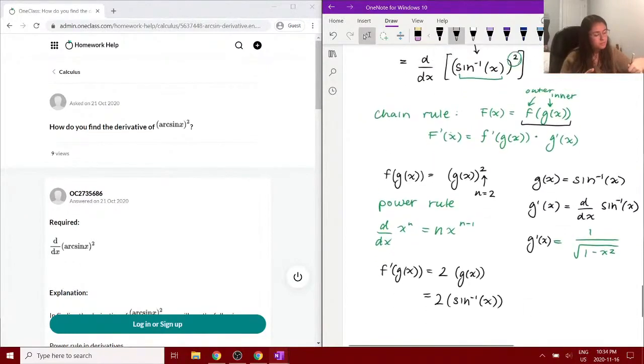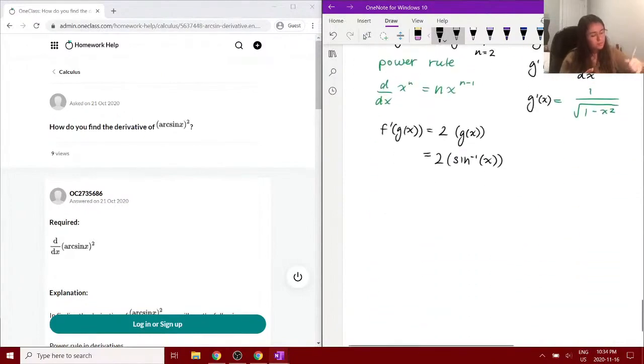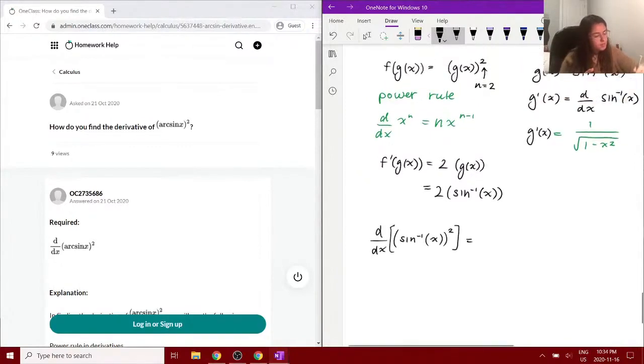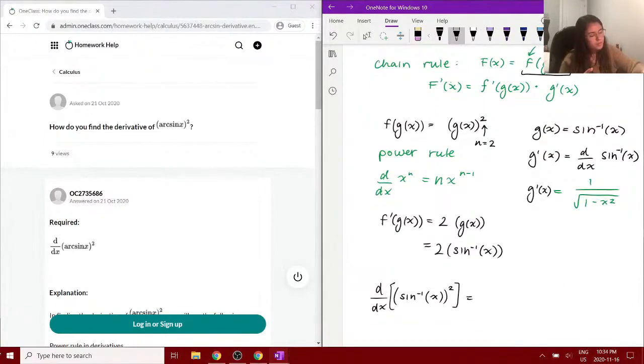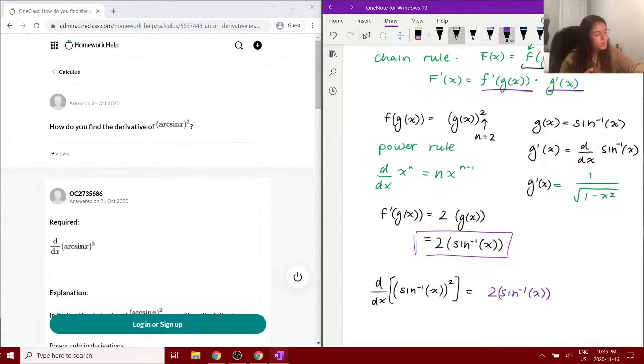So now when we're using our chain rule, if f of x is this main function here, we want to remember the derivative of the main function, inverse sine of x all squared. That is equal to, using the chain rule, the derivative of f of g of x, which we just found to be 2 times the inverse sine of x, times the derivative of g of x, which we saw was 1 over square root of 1 minus x squared.